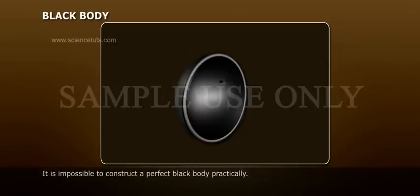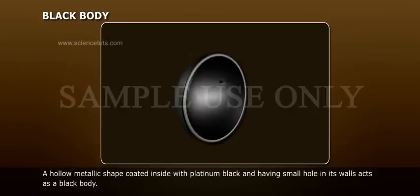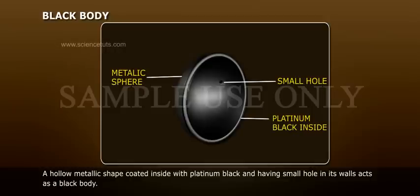Black body: It is impossible to construct a perfect black body practically. A hollow metallic shape coated inside with platinum black and having small holes in its walls acts as a black body.